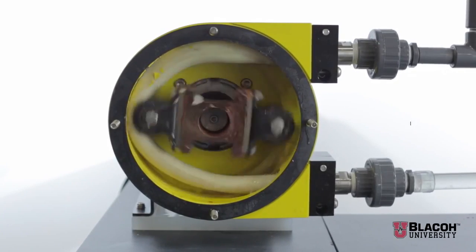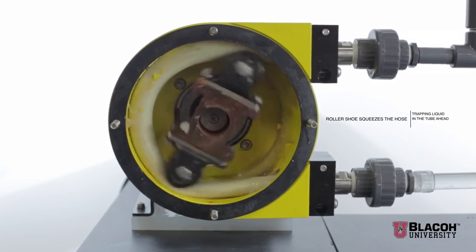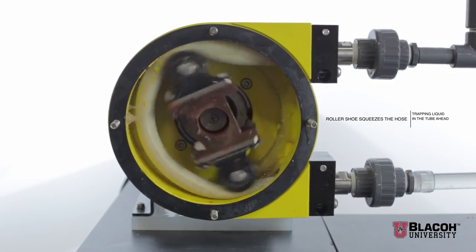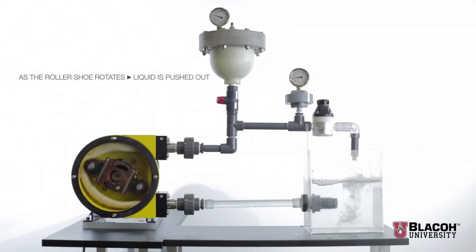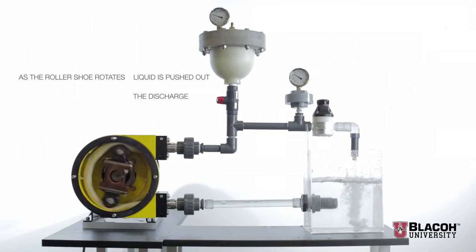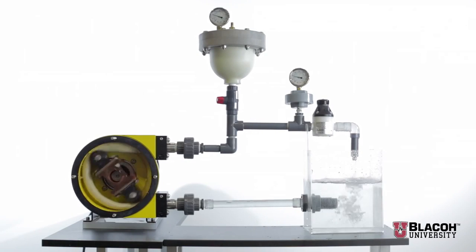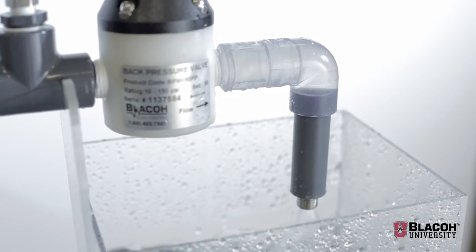At the pump inlet, a roller shoe squeezes the hose, trapping liquid in the tube ahead of it. As the roller shoe rotates, liquid is pushed out of the pump's discharge. When the roller shoe releases the hose after discharge, a momentary void or pocket is created where there is no product.